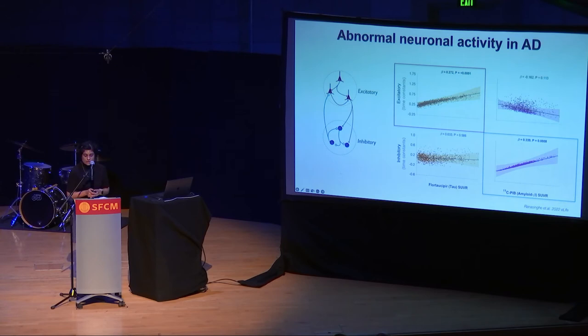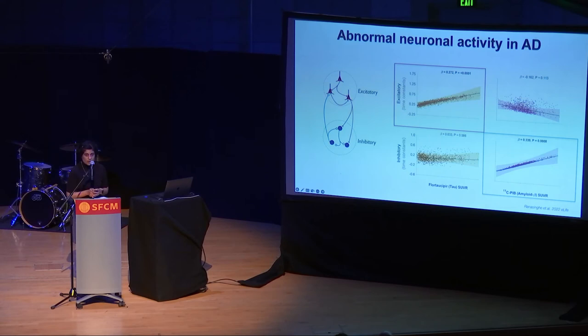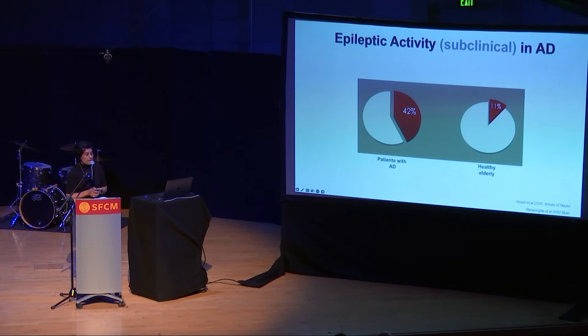This abnormal excitatory and inhibitory neuronal firing gives rise to what we call excitatory-inhibitory imbalance. The classic manifestation of an excitatory-inhibitory imbalance is a seizure. And indeed, with our work at UCSF, we found out that patients with Alzheimer's disease have a very high incidence of subclinical seizures happening in their brains.